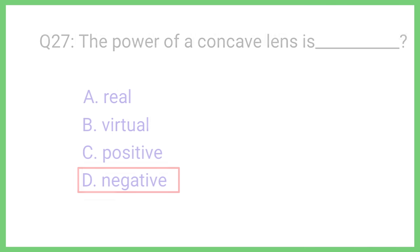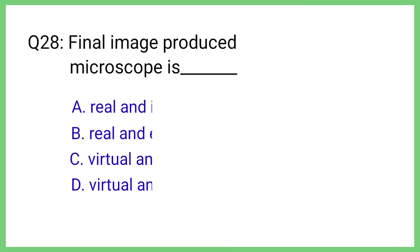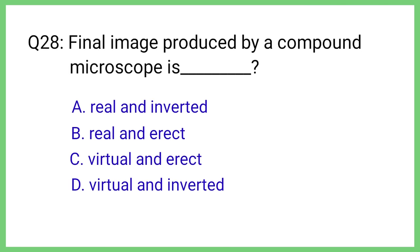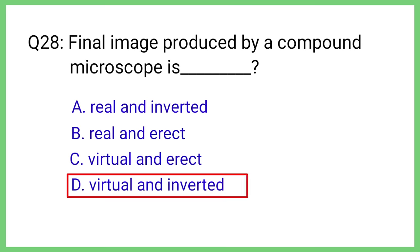Question No. 28. The final image produced by a compound microscope is. The correct answer is Option D. Virtual and inverted.